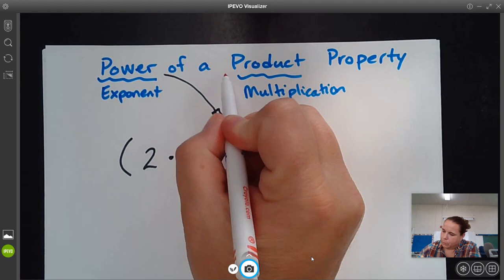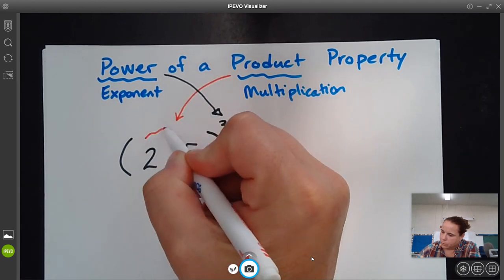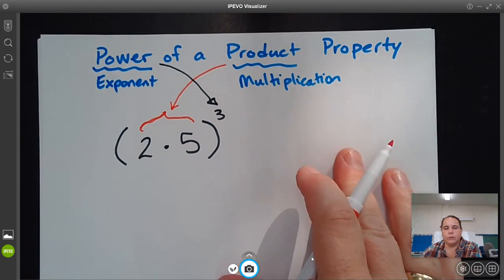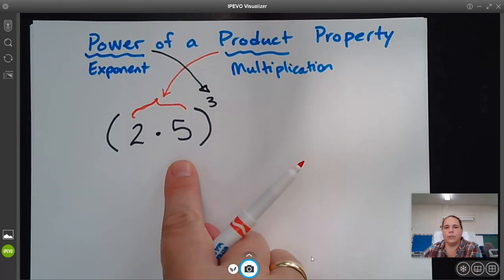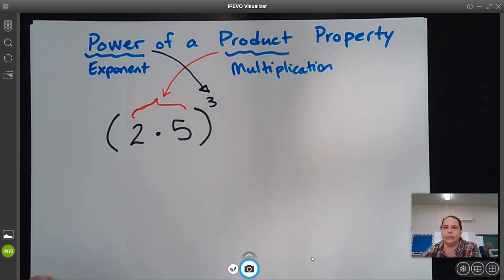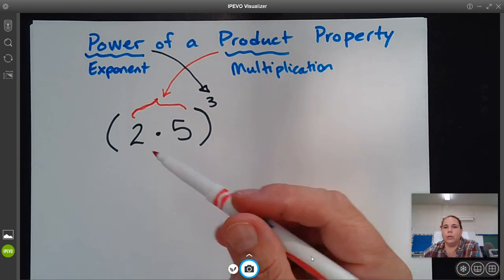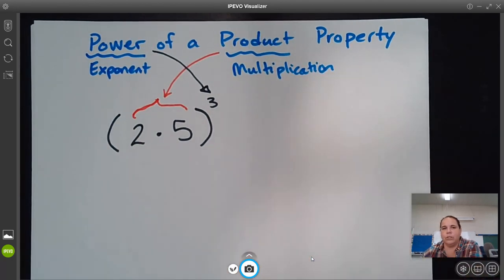So the product, which is all of that right there. So there's a couple things we could do. You need to understand either one of these is an okay way to simplify it because usually this is part of a more complex problem. So you want to look at the rest of the problem and figure out which of these would help you simplify it best.